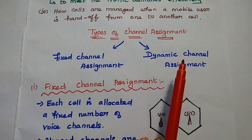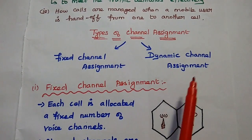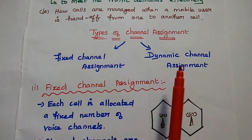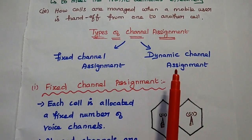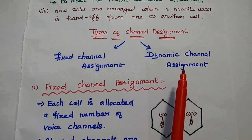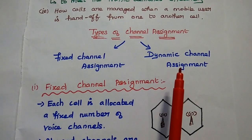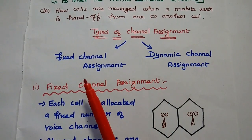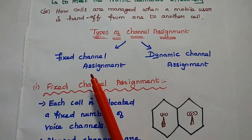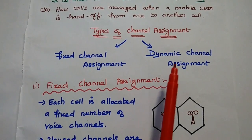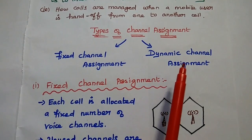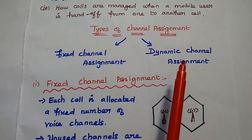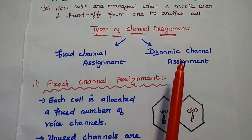In dynamic channel assignment, voice channels are not allocated to the cells permanently. Based on the call request, the channels are allocated. So in fixed assignment the number of channels is fixed, whereas in dynamic assignment it is not permanently fixed — channels will be allocated to the user based on the call request.